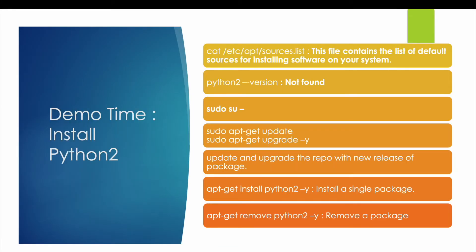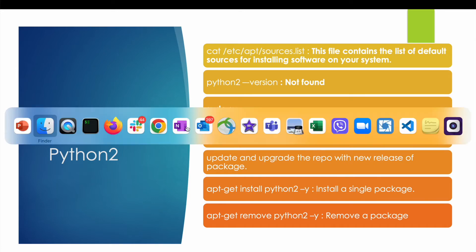Now let's start with the demo. I will show a demo on an Ubuntu-based machine and try to install Python 2 on it. As I have shown in a previous video how to configure an EC2 machine on AWS, the same way today I will create an Ubuntu machine on AWS, connect to it using the SSH option, and show you the demo. Let's get back to my AWS cloud.